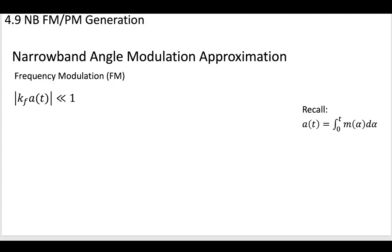The first one was the narrowband approximation. I'll place a link to those videos on how to find that narrowband approximation. For the FM frequency-modulated signal, we had to assume that our constant k_f multiplied by a(t) was much less than 1. This was our narrowband approximation.